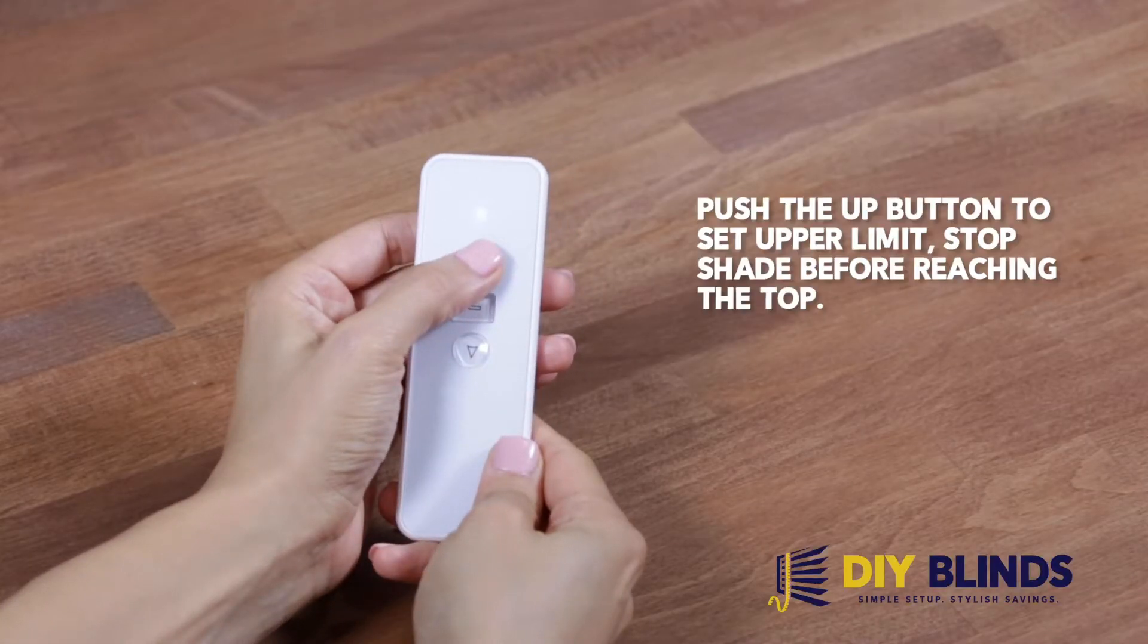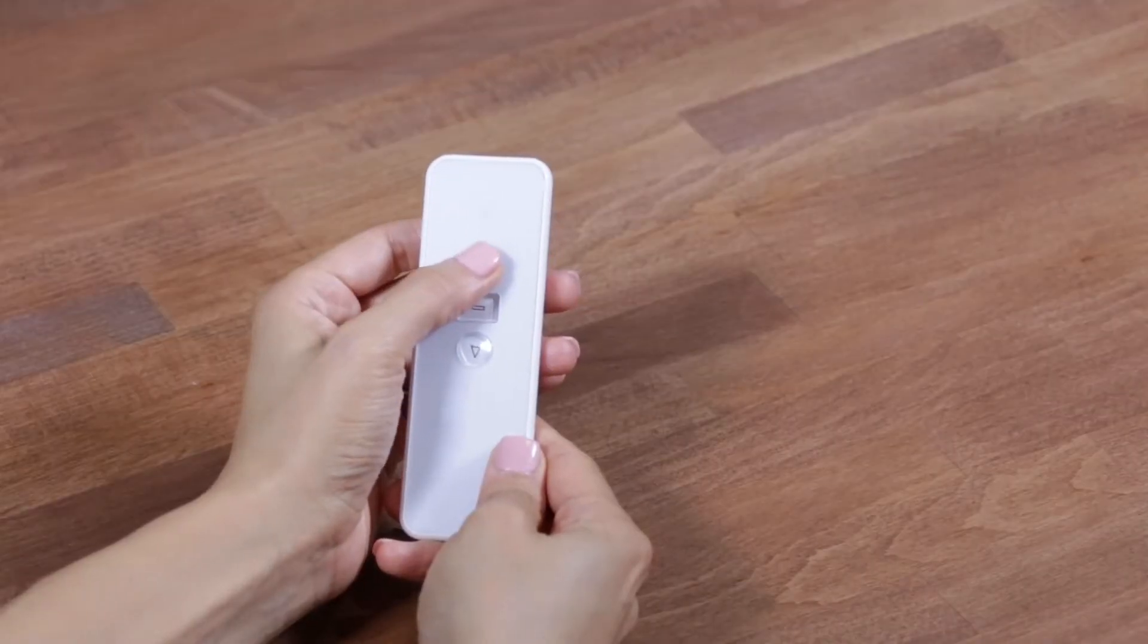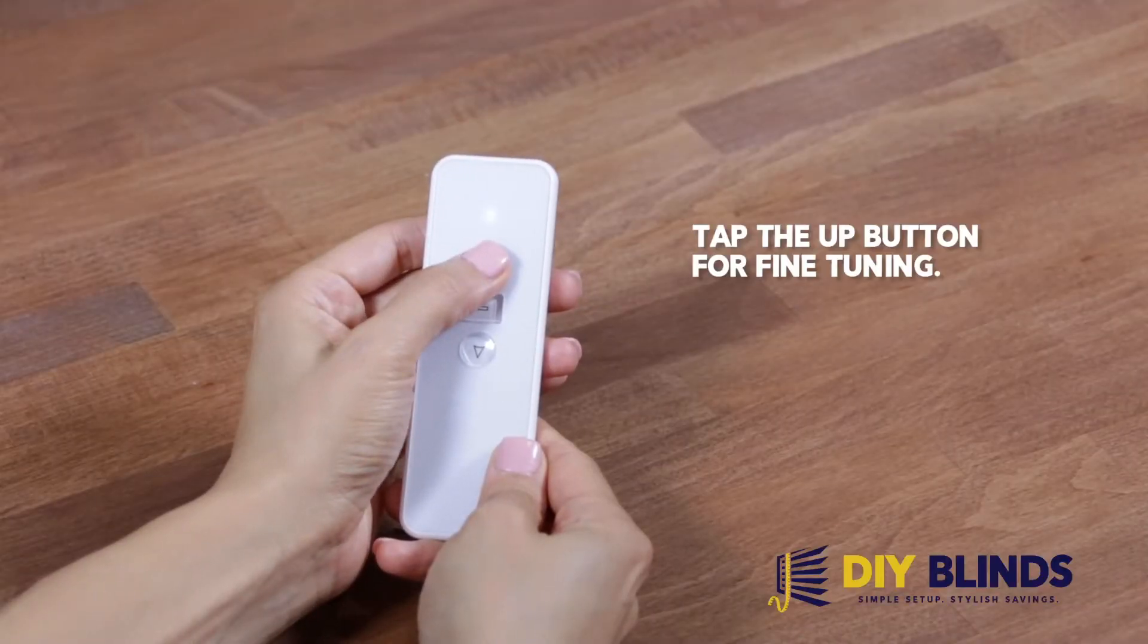Press the back prog button. Push the up button to set the upper limit. Stop shade before reaching the top. Tap the up button for fine tuning.